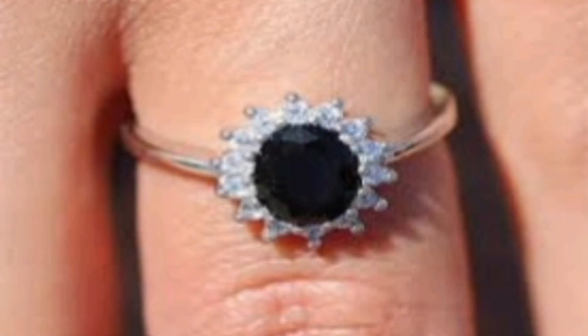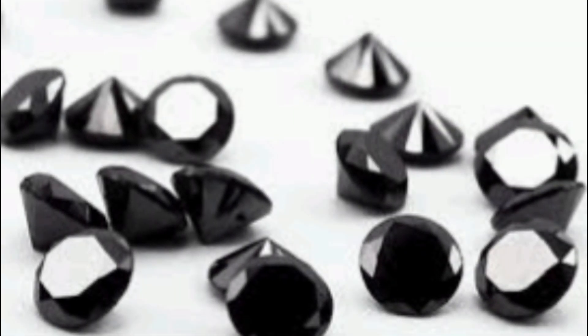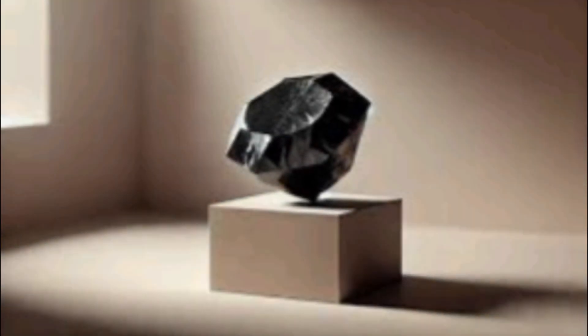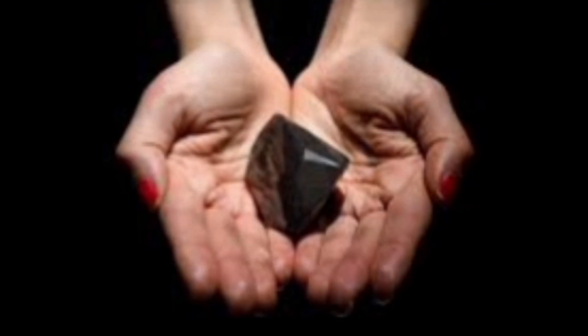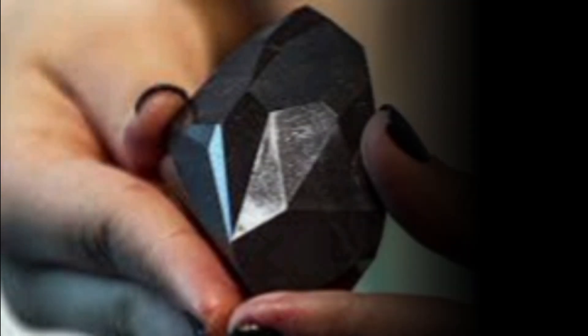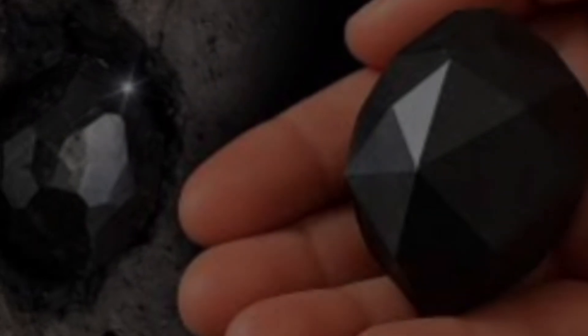Conclusion. Distinguishing real black diamonds from fake ones can be challenging, but with the right knowledge, you can protect yourself from costly mistakes. Look for opacity, metallic luster, hardness, and weight. For absolute certainty, always rely on professional testing and certification. A genuine black diamond is not just a gemstone, it's a symbol of strength, mystery, and rarity. Knowing how to tell real from fake ensures that your investment truly shines.